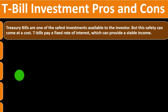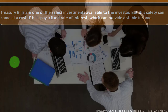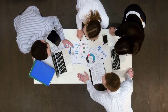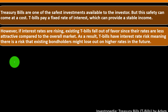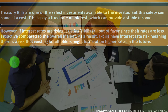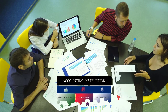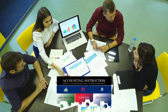T-bills investment pros and cons: Treasury bills are one of the safest investments available to the investor. You're buying from the government, and you would think the government is not going to default. If they did, it would be a major crisis. However, this safety can come at a cost. T-bills pay a fixed rate of interest, which can provide a stable income. But if interest rates are rising, existing T-bills fall out of favor since their rates are less attractive compared to the overall market. That's going to be the trade-off — it's a very safe investment, but you're not going to get a whole lot of return on it.